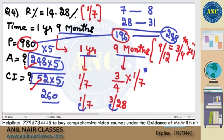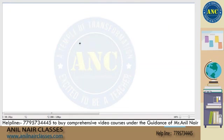Just follow the questions one by one — wherever there is a concept gap, we will discuss it. We are first covering all compound interest problems; after that we will discuss simple interest, because SI is very easy compared to CI. Today's class is again on CI. Question number 5 — write it down.